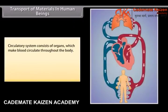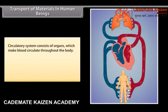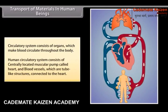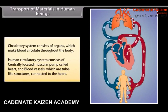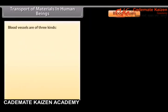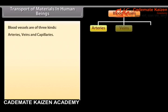Circulatory system consists of organs which make blood circulate throughout the body. The human circulatory system consists of a centrally located muscular pump called the heart and blood vessels, which are tube-like structures connected to the heart. Blood vessels are of three kinds: arteries, veins and capillaries.